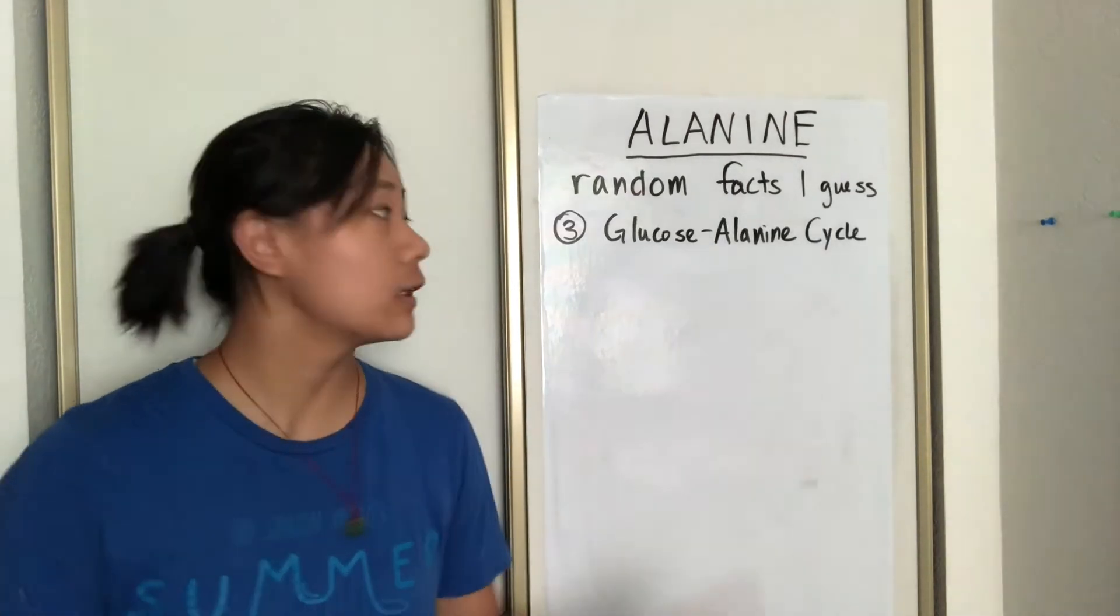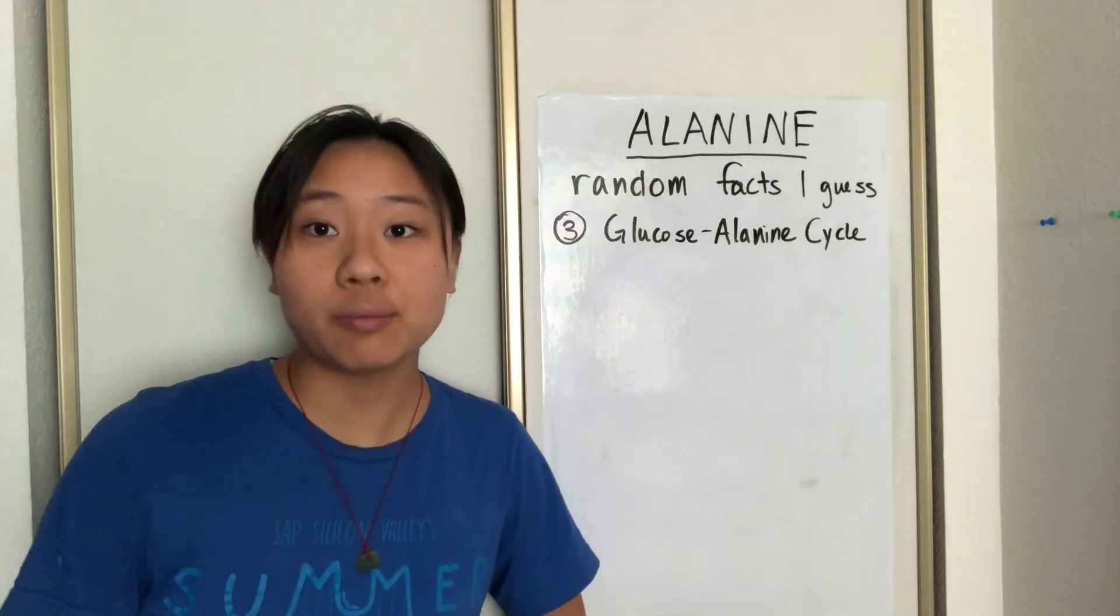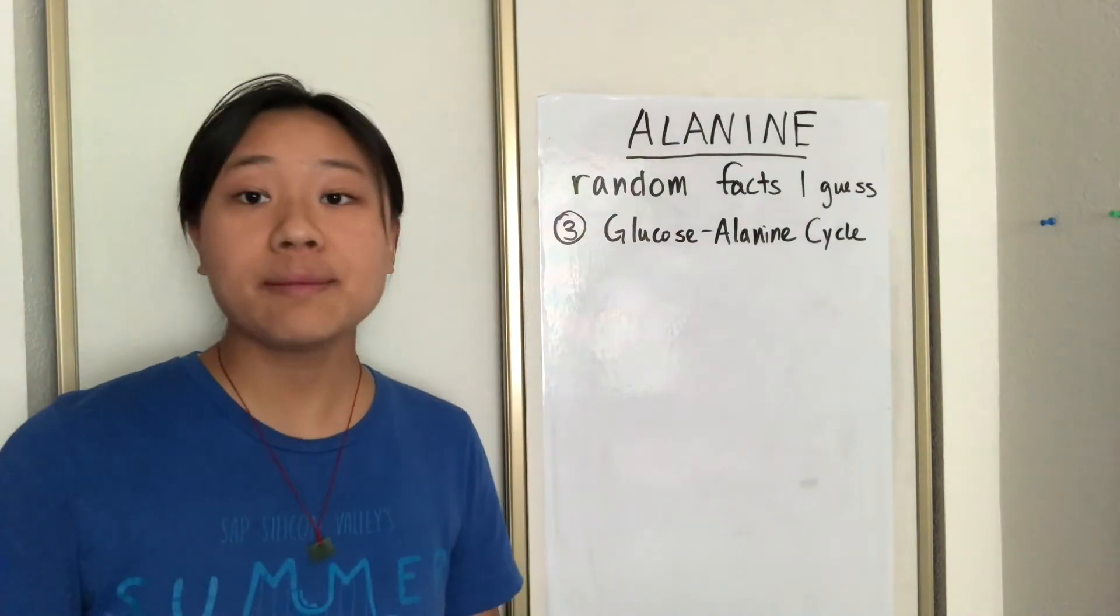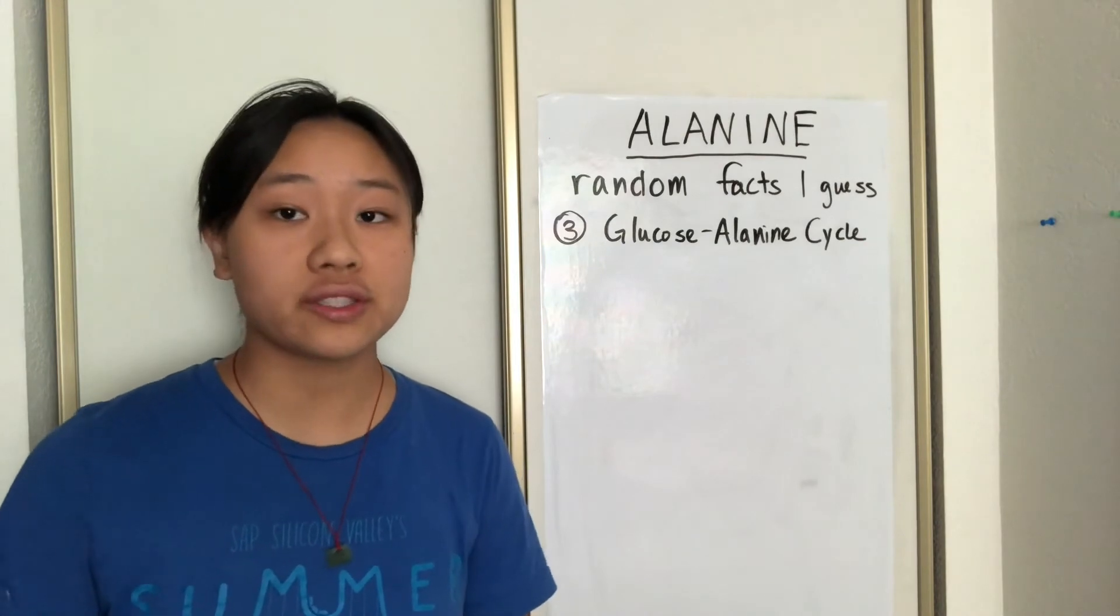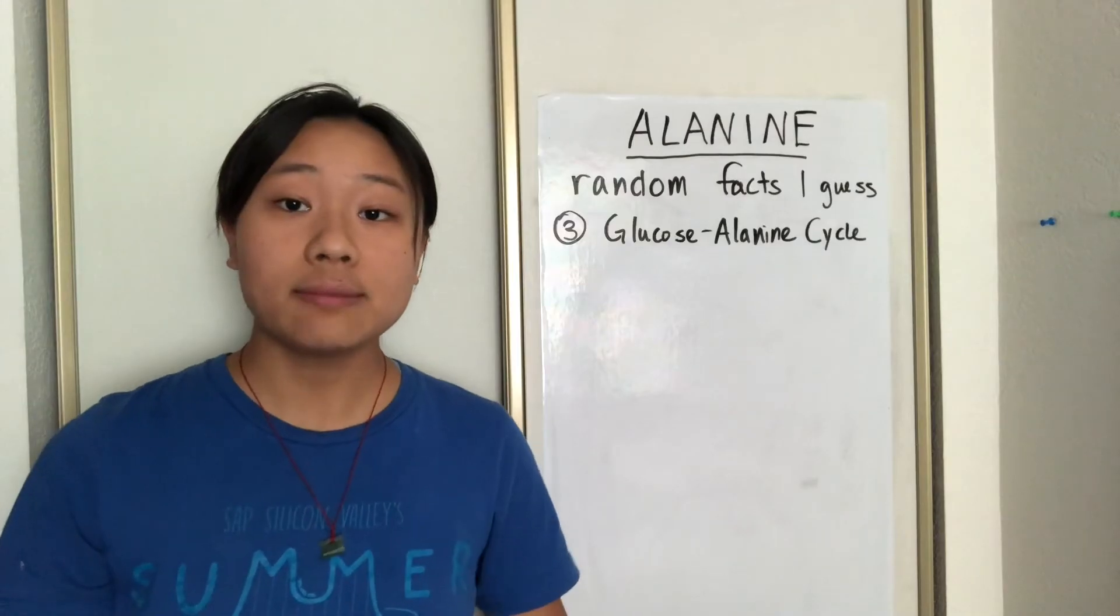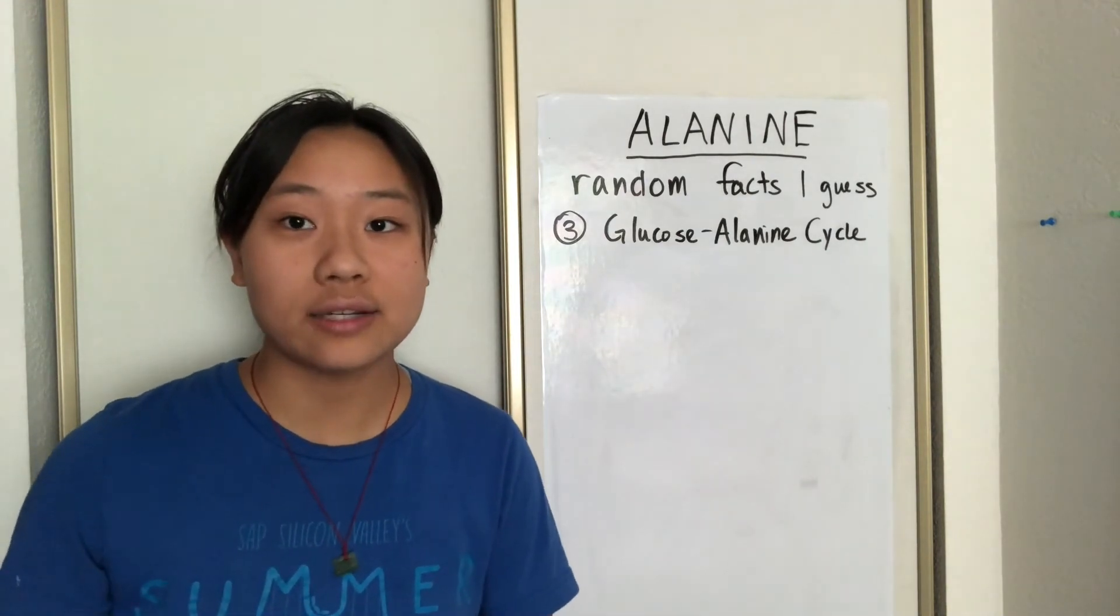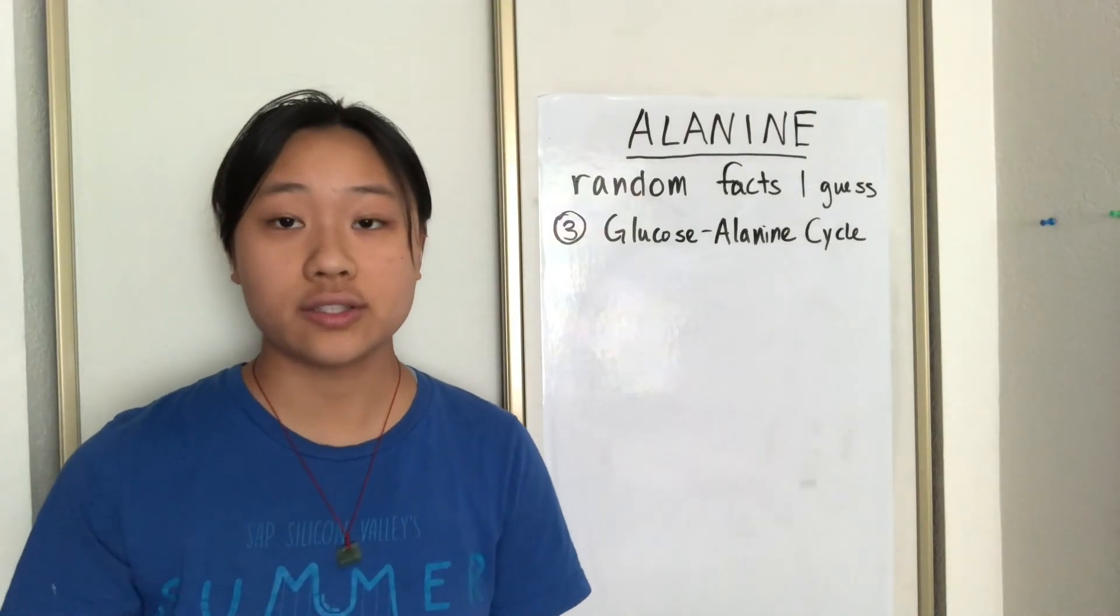Fun fact number three, the glucose alanine cycle. Now, you know how you eat protein and it gives you calories? Well, that's because sometimes your body breaks down amino acids for fuel instead of using it to make other proteins. This can be seen in something called the glucose alanine cycle, which is a cycle between your skeletal muscles and your liver. Now, your muscles, which I'm sadly lacking in, will sometimes break down amino acids for energy, and pyruvate gets kind of converted to alanine when it goes to the liver and does some reshuffling to recycle the molecules. And that's why alanine is seen in high concentrations in your muscles.